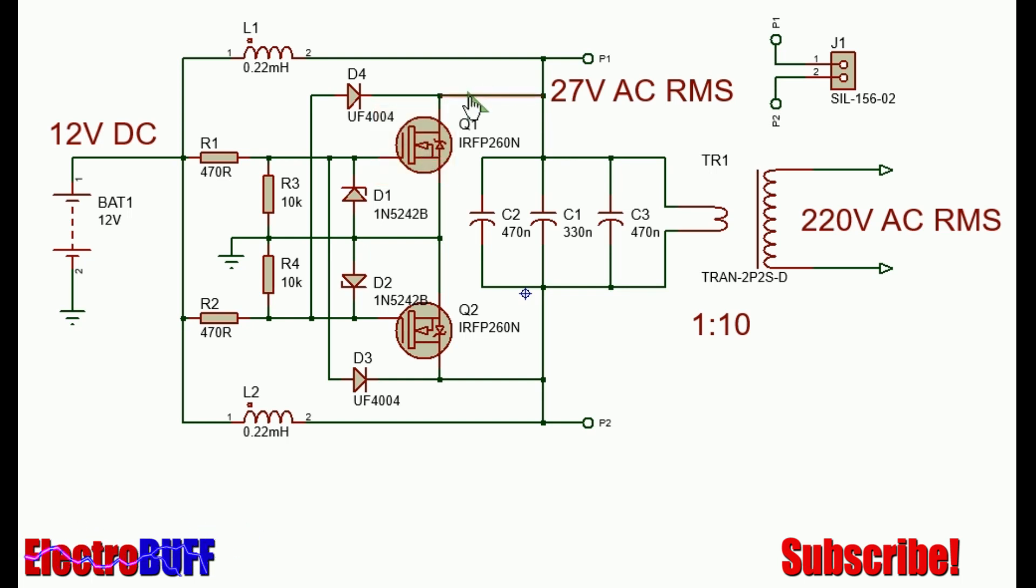When Q1 conducts, there will be a virtual ground here and so current will flow through L2, through the primary winding of the transformer, and through Q1.